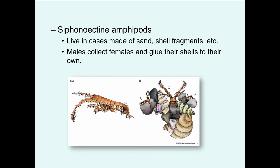A different example is siphonectine amphipods, where individuals live in cases made of sand and shell fragments and pebbles. Rather than defending a preformed cluster, the males walk around collecting females and glue them onto their own shell, creating the cluster of females themselves.